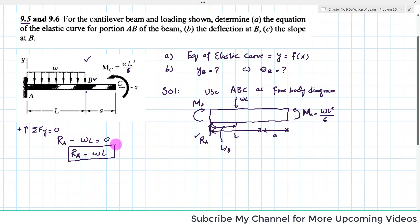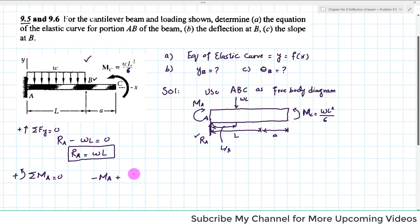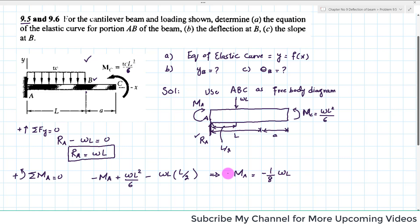Now we will find the reaction moment at point A. We apply the second equilibrium condition: the sum of all moments about point A equals zero, with counterclockwise moment taken as positive. There is a clockwise reaction moment −MA, a counterclockwise moment at point C of +WL²/6, and a clockwise moment due to the concentrated load of −W×L×(L/2). Solving gives MA equal to −(1/3)W×L.